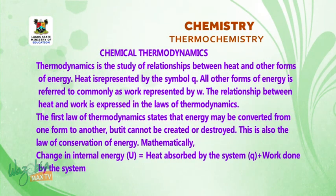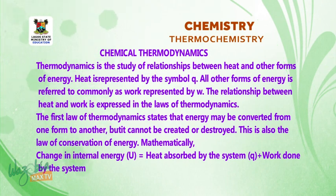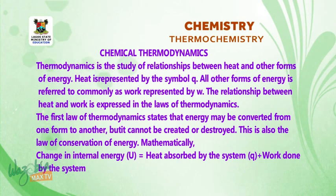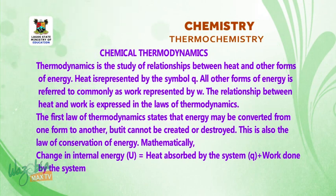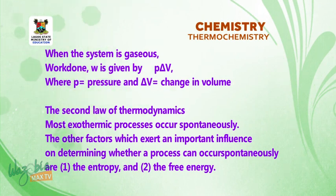Chemical thermodynamics. Thermodynamics is the study of the relationship between heat and other forms of energy. Heat is represented by the symbol Q, and all other forms of energy are referred to commonly as work, represented by W. The relationship between heat and work is expressed in the laws of thermodynamics. The first law states that energy may be converted from one form to another, but it cannot be created or destroyed — this is also the law of conservation of energy. Mathematically, change in internal energy equals heat absorbed by the system plus the work done by the system. When the system is gaseous, work done is given by P multiplied by delta V, where P equals pressure and delta V equals change in volume.